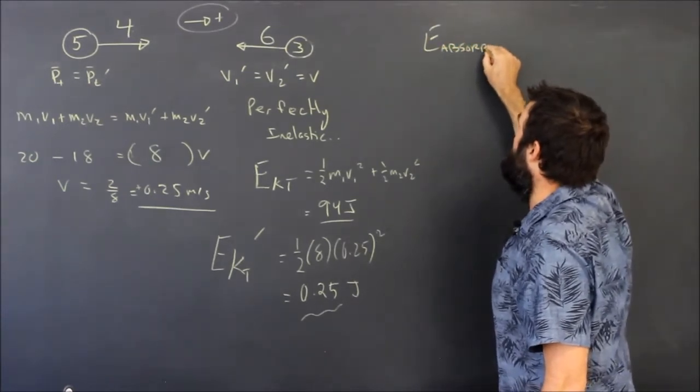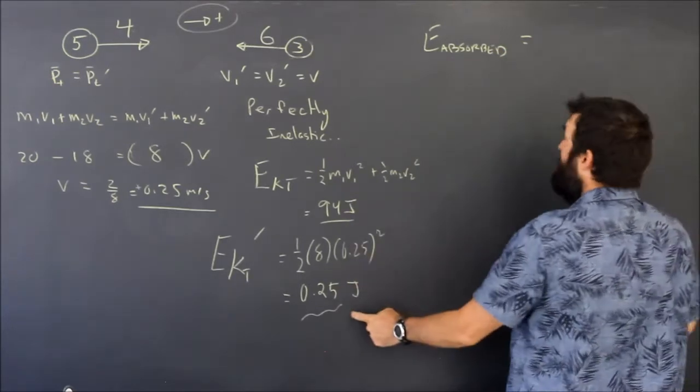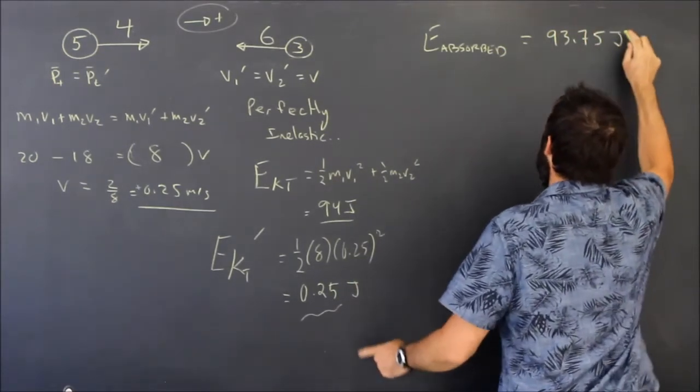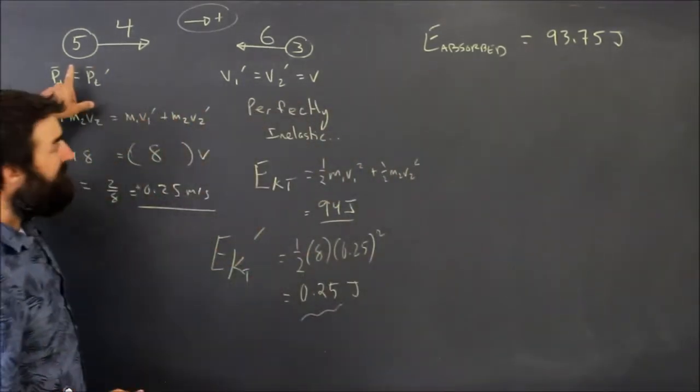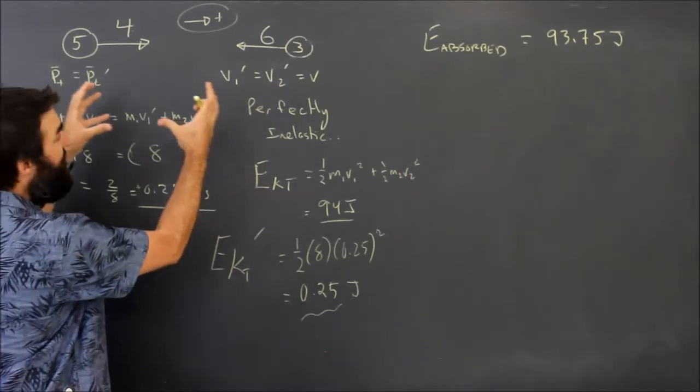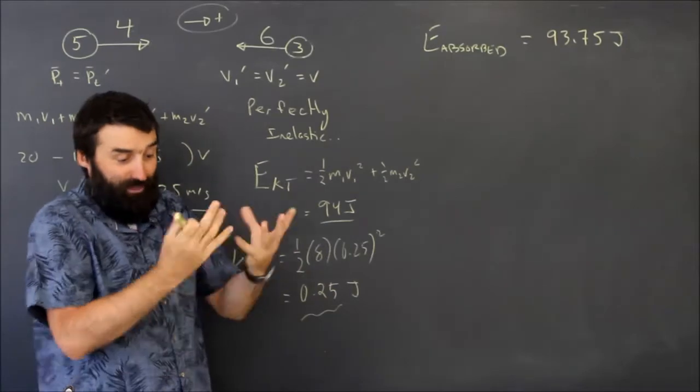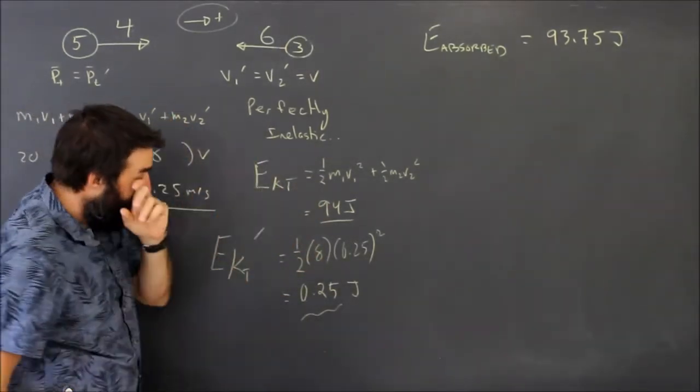The amount of energy absorbed is obviously the difference. What they had and what they ended up with is 93.75 joules. What that means in this case is that 93.75 joules of kinetic energy had to be turned into some other kind of energy. Sound, heat, smashing, breaking, energy of deformation in order to remove all that energy.